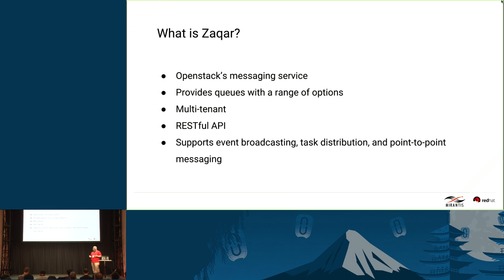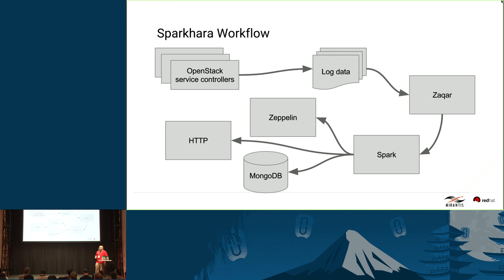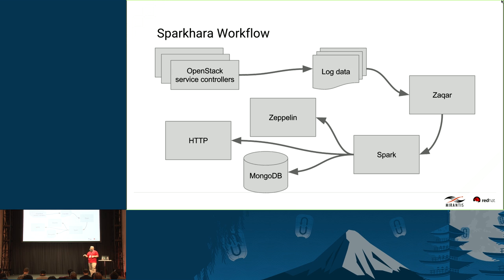We also used Zakhar. Zakhar is OpenStack's messaging service. We used it as a queue between multiple endpoints. It can work in multiple tenants, has a RESTful API, and supports event broadcasting, task distribution, and point-to-point messaging. You can configure endpoints so something can push messages into the queue, and Zakhar can message subscribers to let them know a message has arrived, or you can pull messages off the queue.